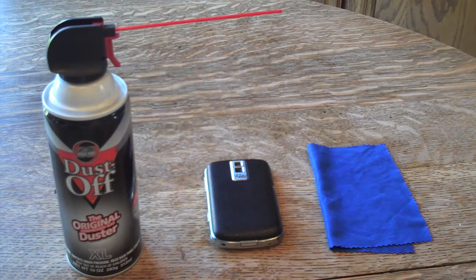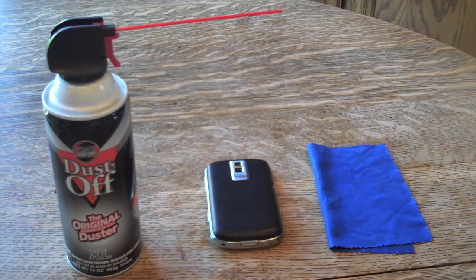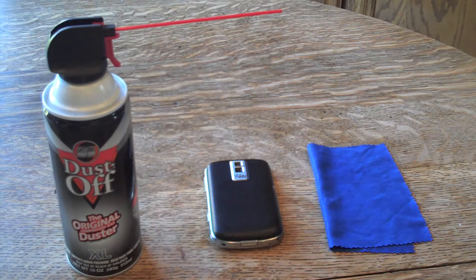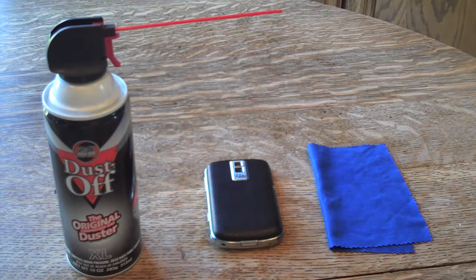The first would be a can of air. The second thing would be the BlackBerry device itself. And of course, the third thing would be a soft microfiber cloth, such as a lens cleaner that we have here on the right.